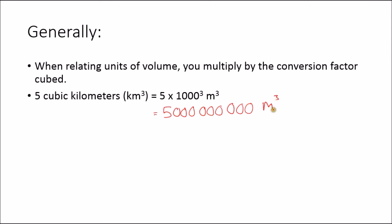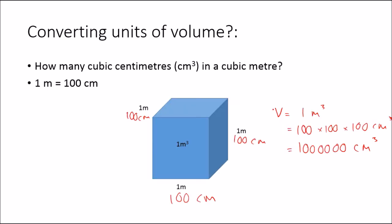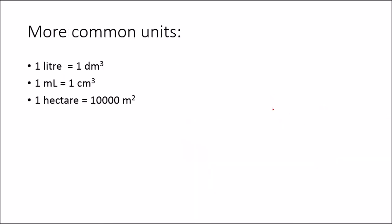That's why cubic kilometers is such a ridiculously large volume. Now, just the last thing to mention is that some of these units are a bit unusual and we don't use them very much. We tend to use some other units for area and volume much more commonly. The common unit of volume is the liter, and 1 liter is 1 decimeter cubed. Deci means one tenth.